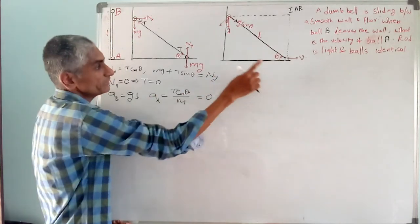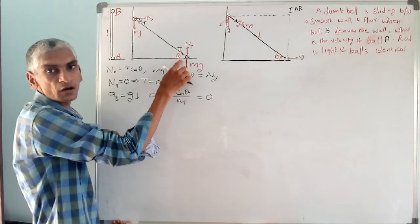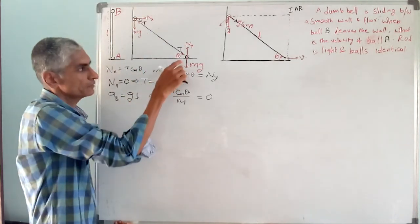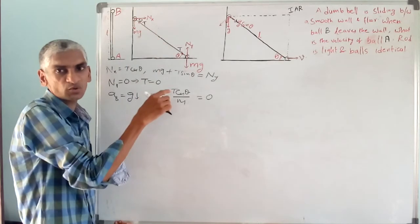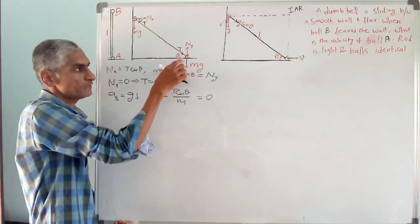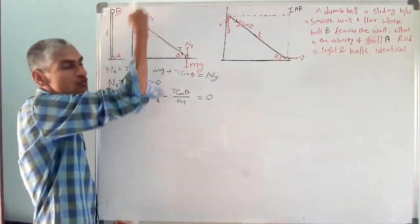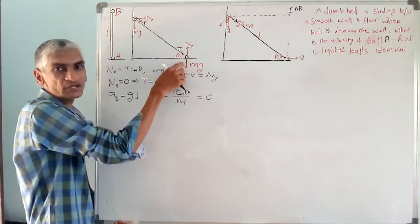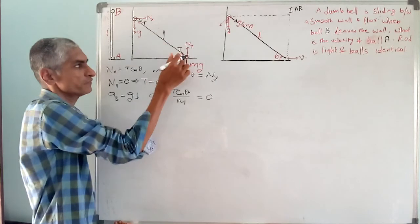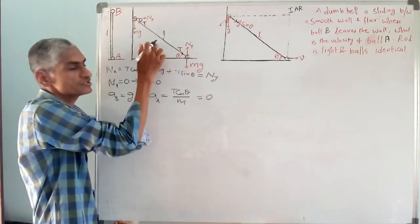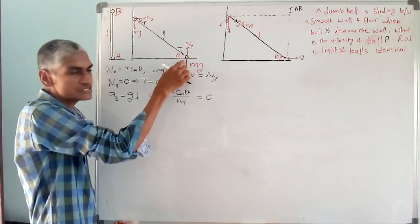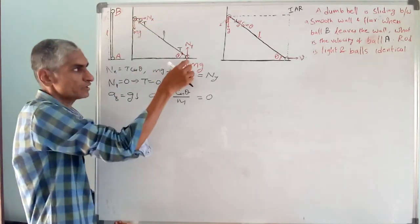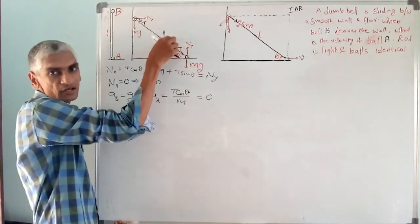Now in the frame of A, how is B observed? The distance between these two is constant — it is the rod length L. So in the frame of A, B moves in a circular path, because it must always be at distance L from A. So in this frame, B moves in a circle of radius L with center at A.